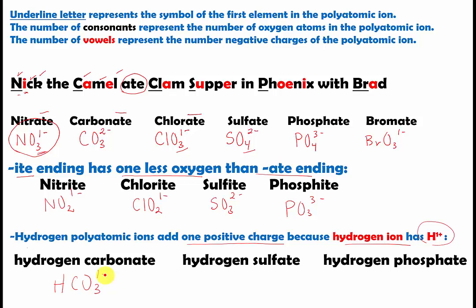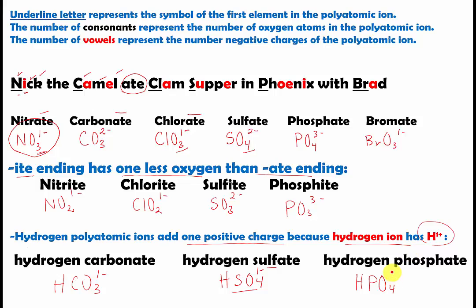For hydrogen sulfate, you get H and SO4 — same as sulfate — but instead of two minus, you now have one minus. For hydrogen phosphate, the formula is HPO4. It's no longer three minus; it's going to be two minus. Remember, hydrogen ion adds one positive charge, so the overall charge decreases by one.